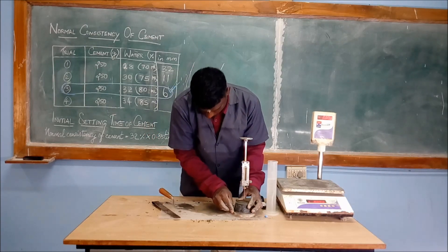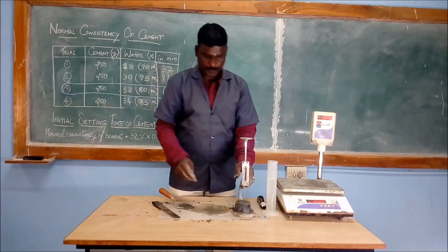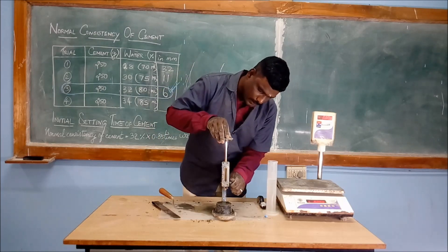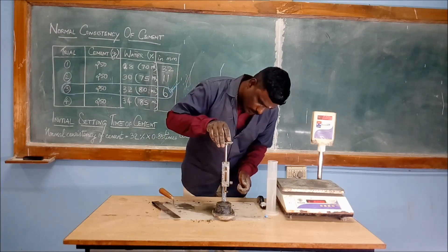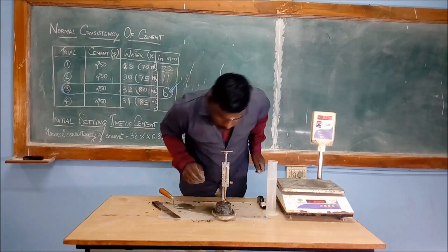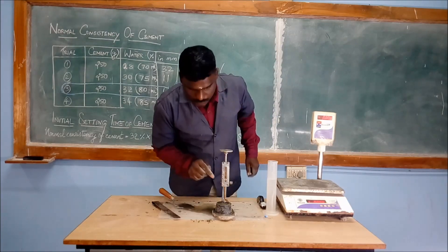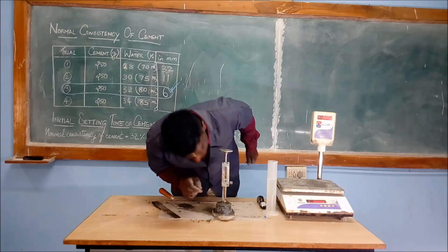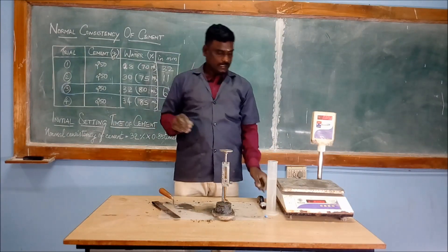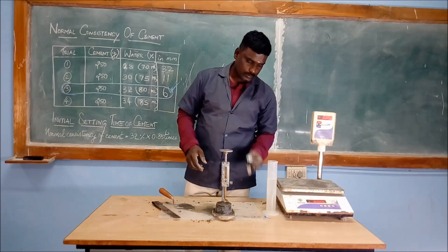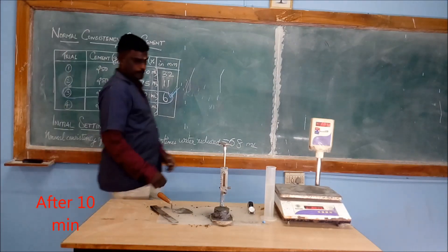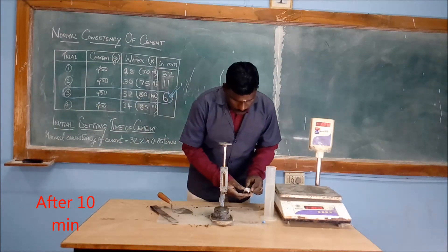The Vicat mould has been placed at the bottom of the Vicat apparatus. Now slowly and gradually we have to release it. You can see that zero is the reading — for the starting time, zero is the reading. After ten minutes, we are going to check the reading again.